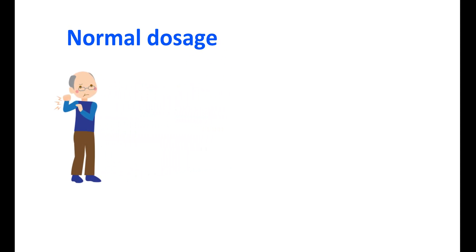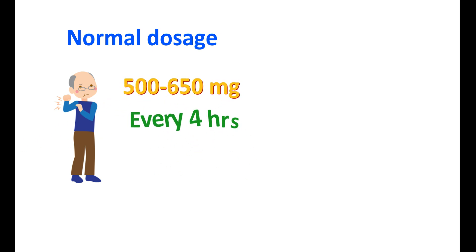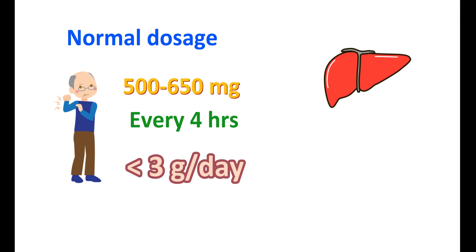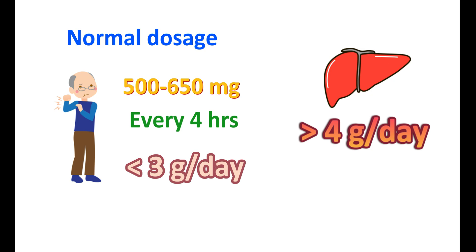The normal dose of acetaminophen in adults ranges from 500 to 650 mg per dose, given every four hours, generally four times a day. So the maximum dose is less than 3 g per day. However, liver toxicity can be observed at a dose above 4 g per day, which is called the toxic dose.